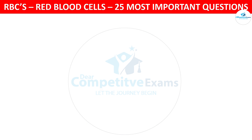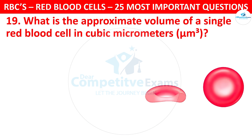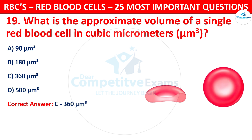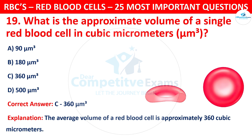Question 19. What is the approximate volume of a single red blood cell in cubic micrometers? Your options are: 90 cubic micrometers, 180 cubic micrometers, 360 cubic micrometers, or 500 cubic micrometers. The correct answer is C, that is 360 cubic micrometers. The average volume of a red blood cell is approximately 360 cubic micrometers.